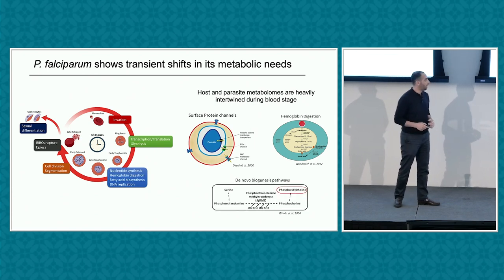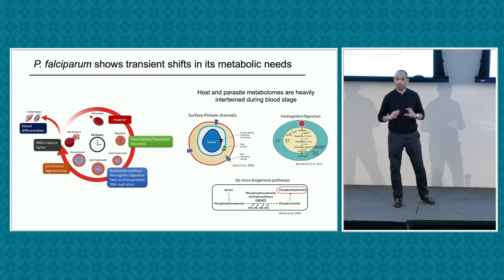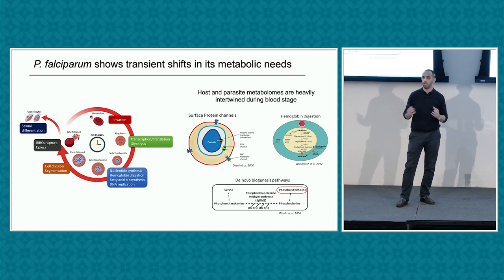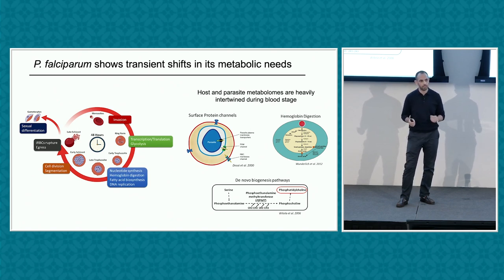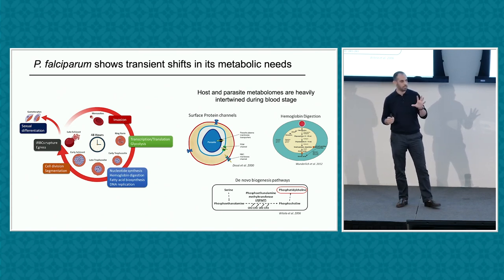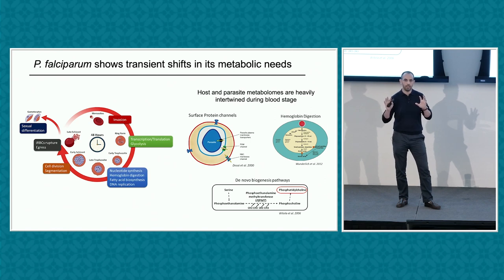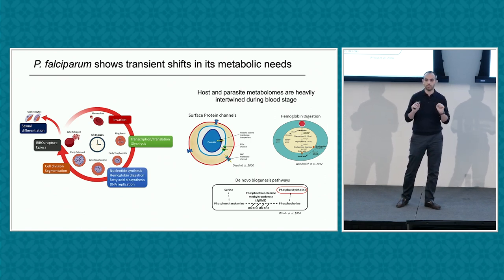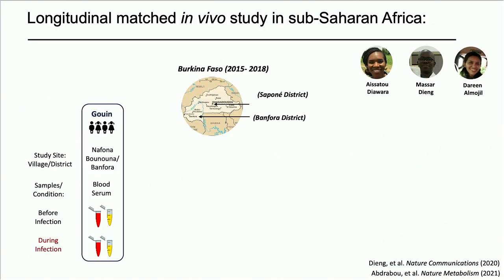Not only that — the parasite competes for amino acid metabolism with the host and drives hemoglobin degradation to obtain the amino acids it needs for growth. However, these are not the only components that play a role in the fate of infection. The immune system and immune response also play a very important role. So we have three components: the red blood cells hosting the parasite, the parasite competing for nutrients, and the immune response.